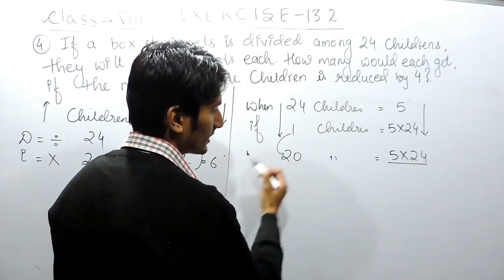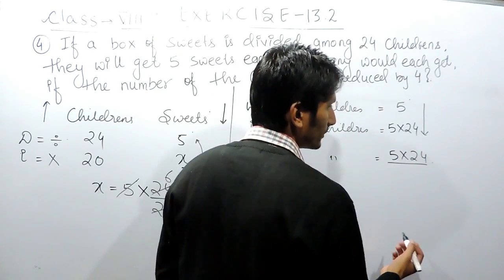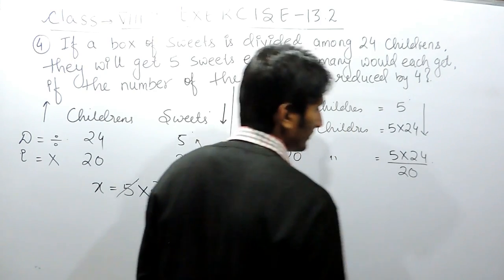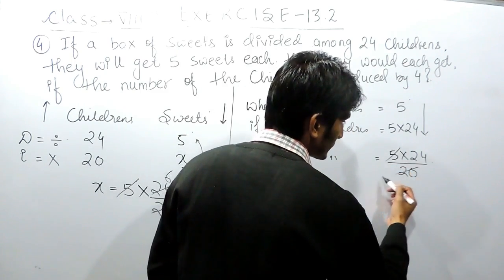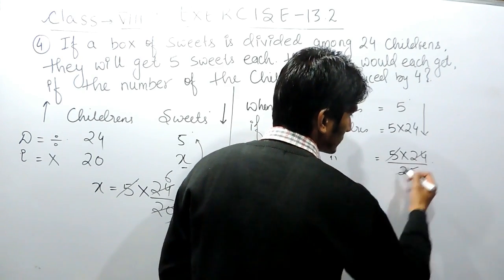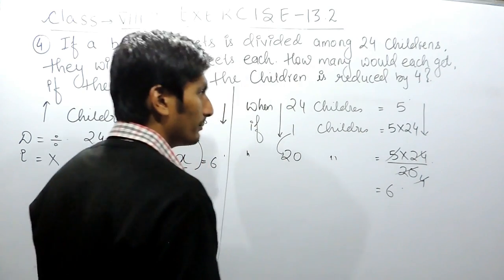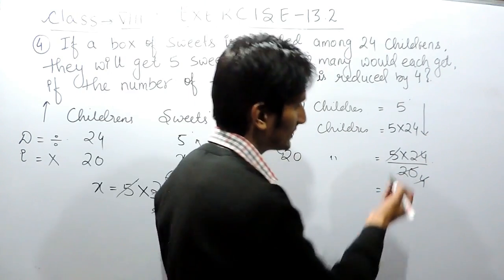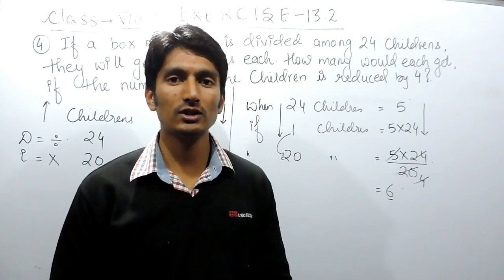When the number of children increases to 20, the sweets per person must decrease. Because the children are increasing, the number of sweets must decrease, so we divide. Solving this: 5 times 24 divided by 20 gives 4 times 6, which equals 6. So the number of sweets each person gets is 6 sweets per person. This is how we solve this question.